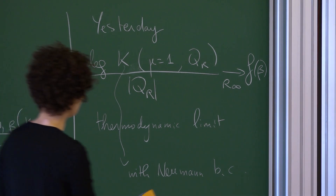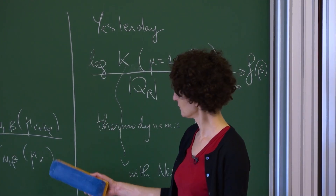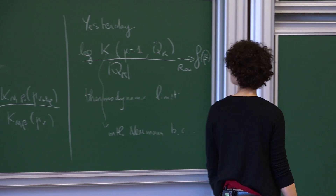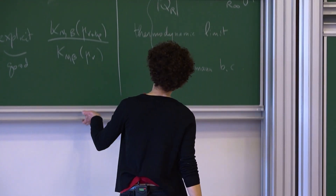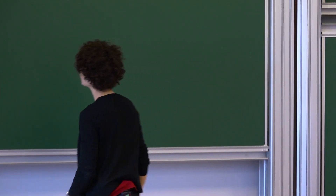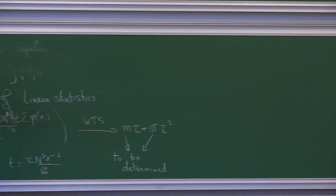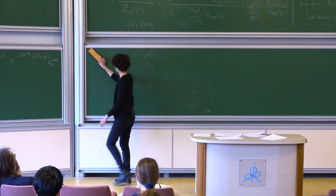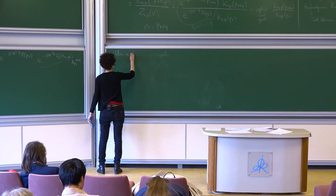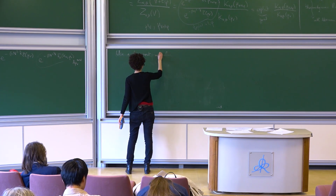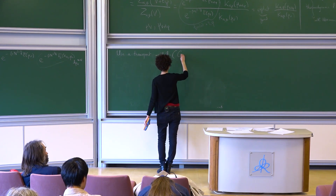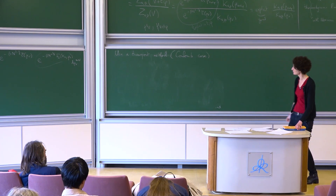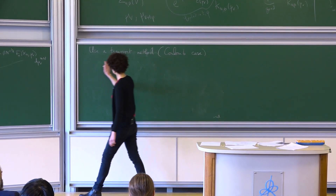This piece of information is not quite enough because now we need varying densities mu_V. How do you go from a constant density to a varying density? There is a first idea we're going to implement right away, which is a transport method. I'm going to present it only in the Coulomb case because the non-Coulomb case is more involved and hasn't been done even.